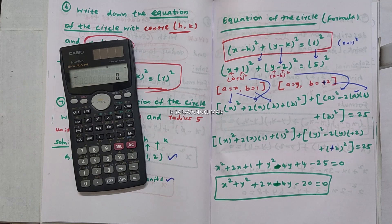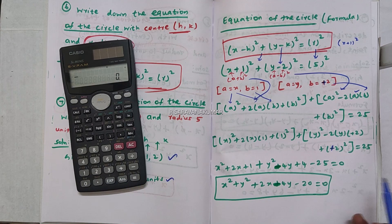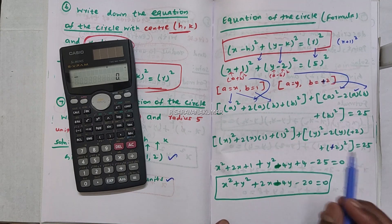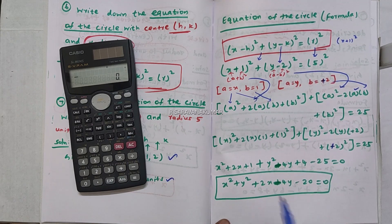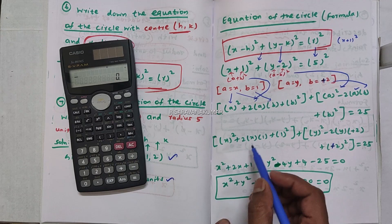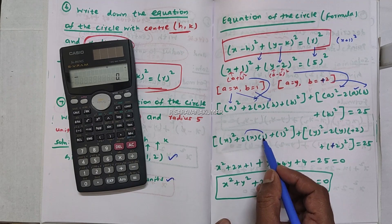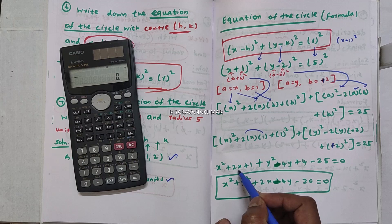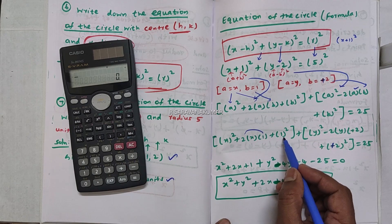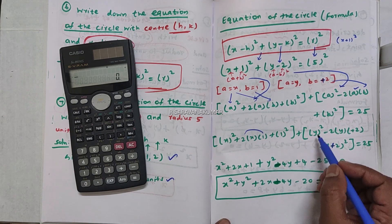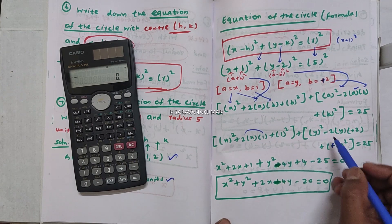Equal to 25. We can expand using the a plus b whole square and a minus b whole square formulas. We can simply do x squared plus 2 into 1, which gives 2x, plus 1 squared is 1, plus y squared.